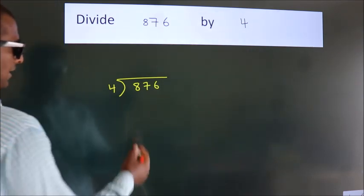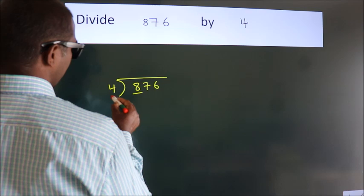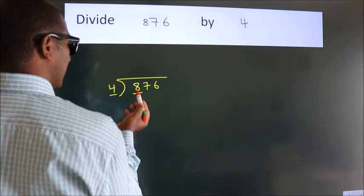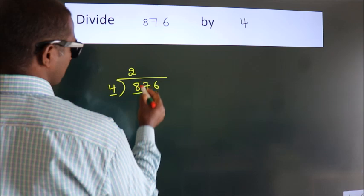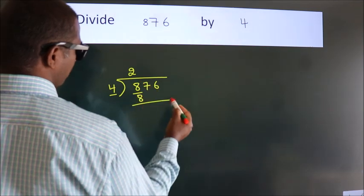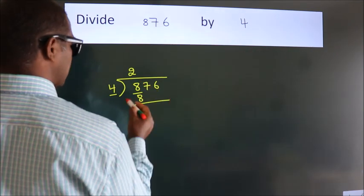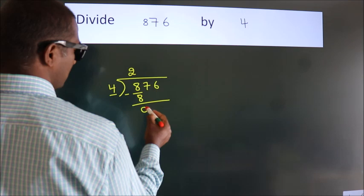Next, here we have 8, here 4. When do we get 8? In the 4 table. 4 times 2 is 8. Now, we should subtract. We get 0.